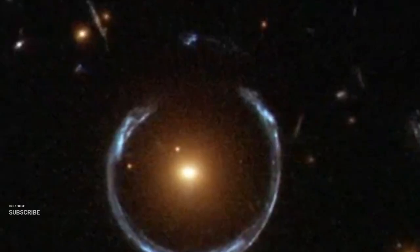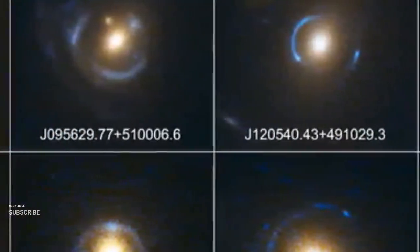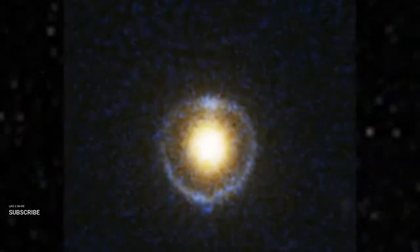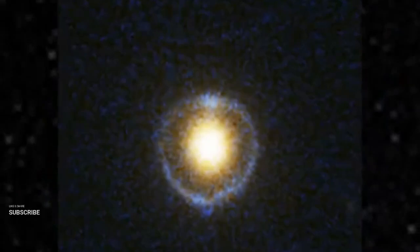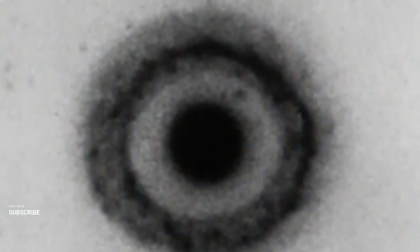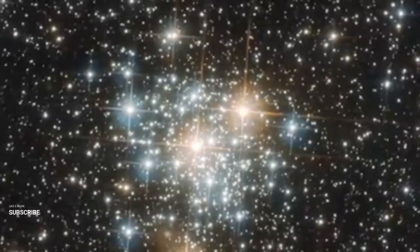But here's the mystery: Hoag's object lacks the signature spiral arms that typically connect a galaxy's core to its outer regions. It's as if something sculpted out the spiral pattern, leaving behind this strikingly unique structure. What could have caused such a peculiar formation? That question continues to puzzle astronomers and fuels the enduring fascination with this extraordinary galaxy. The striking emptiness at the heart of Hoag's object has puzzled astronomers for decades. But in the 70 years since its discovery, scientists have identified many other galaxies with similar features. These ring-like structures now make up their own fascinating subcategory of irregular galaxies.